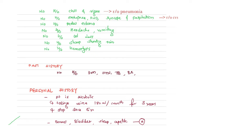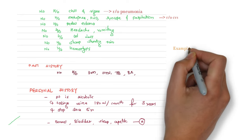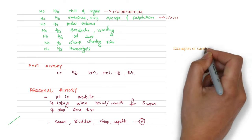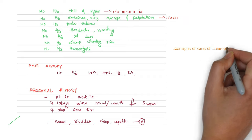These negative findings help rule out CVS and CNS. No history of weight loss means we can say no TB — though TB has a very chronic history of cough and here it is only three to four days. Sharp shooting pain rules out CVS and MI. Hemoptysis — in which cases can you find hemoptysis? That is your homework.